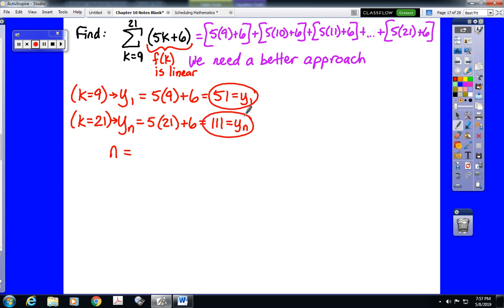Now the only other thing we need to do a geometric sequence is the number of terms. Well as it turns out for any sigma notation, n is the top number minus the bottom number plus 1. And I hope you're willing to just take my word for it that that will always work. So in this case n would be 21 minus 9 plus 1, or 13 terms.